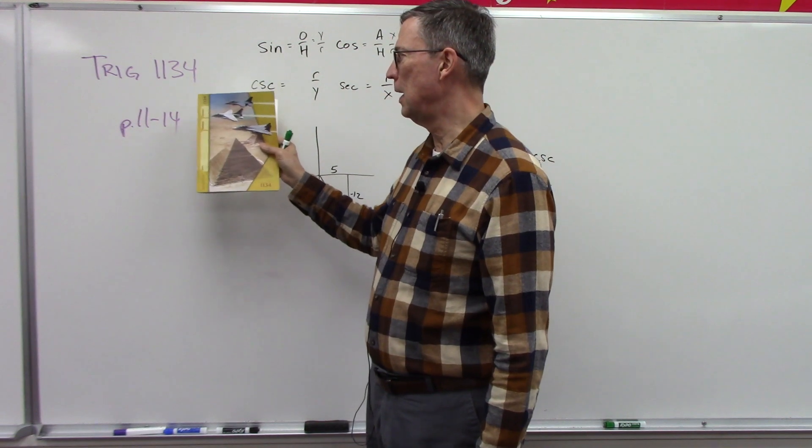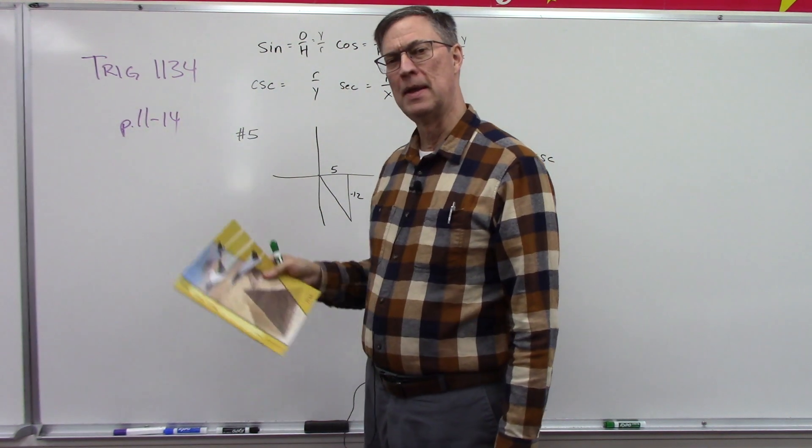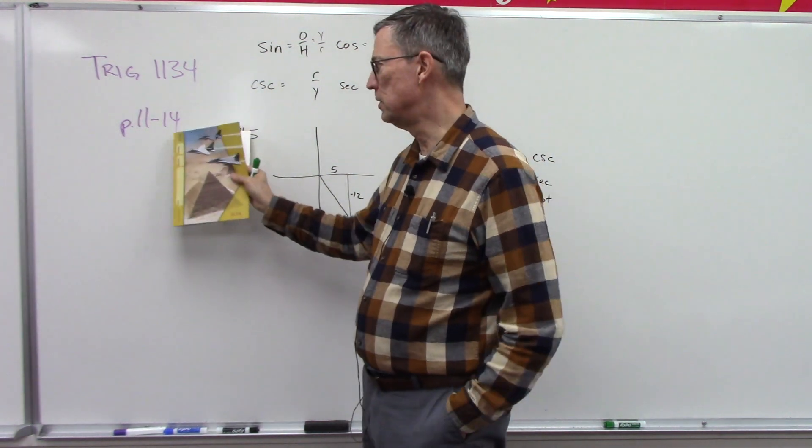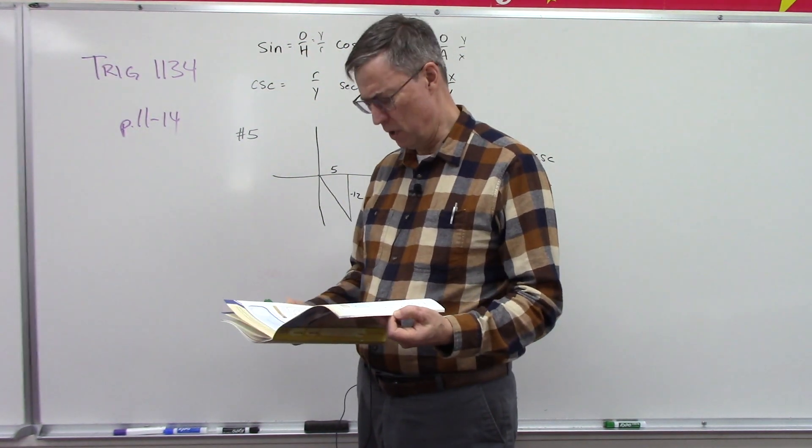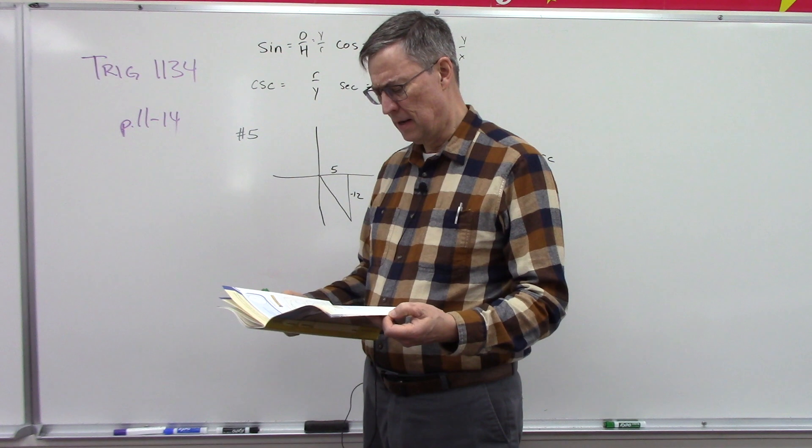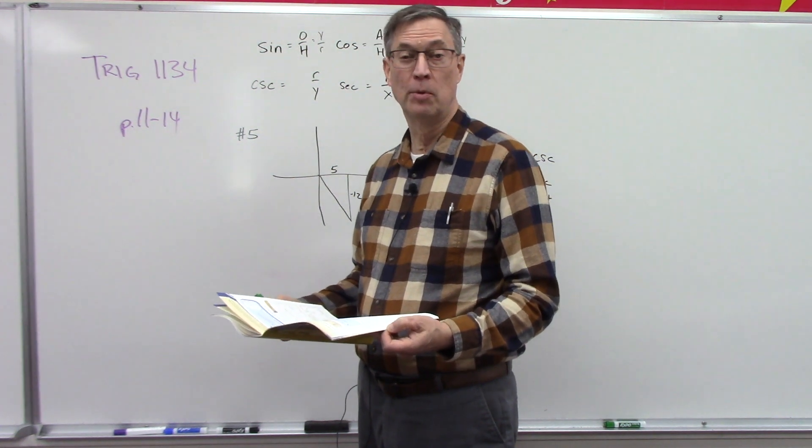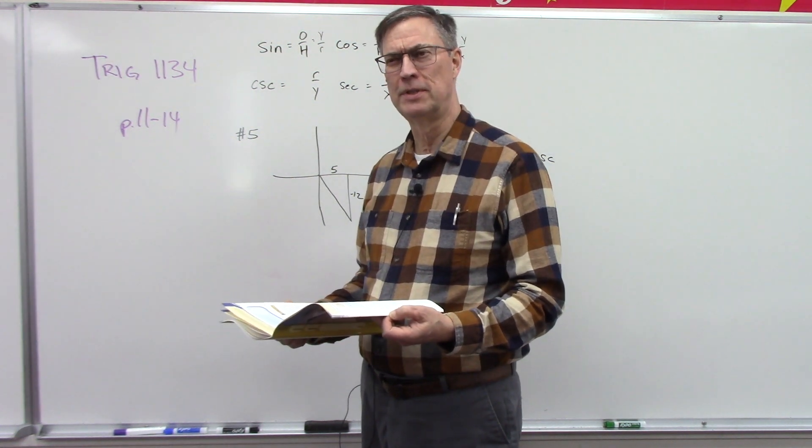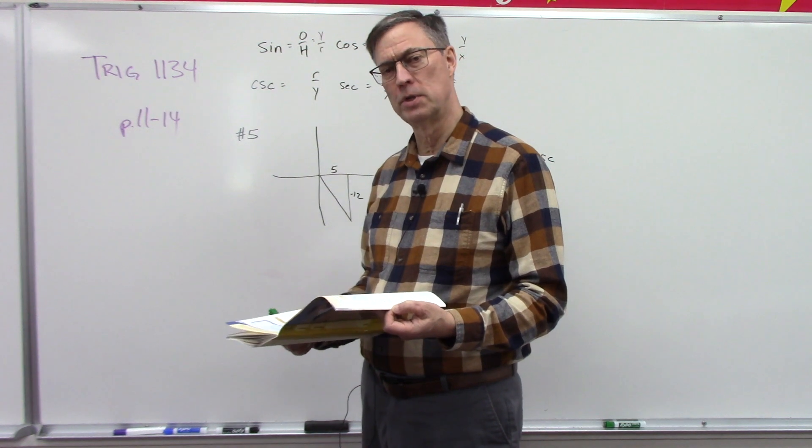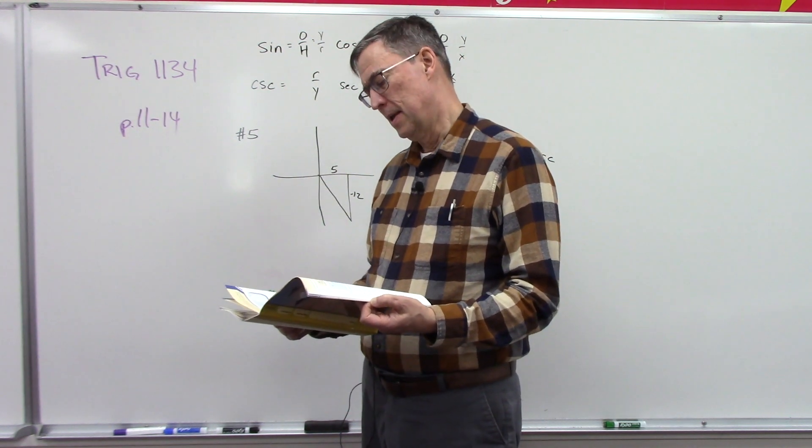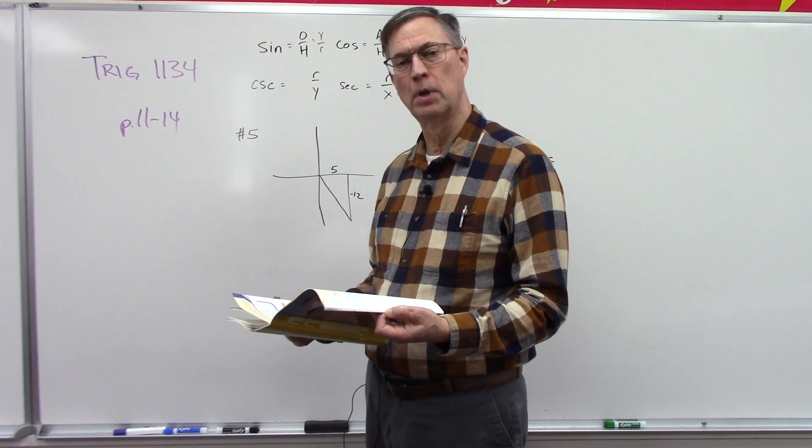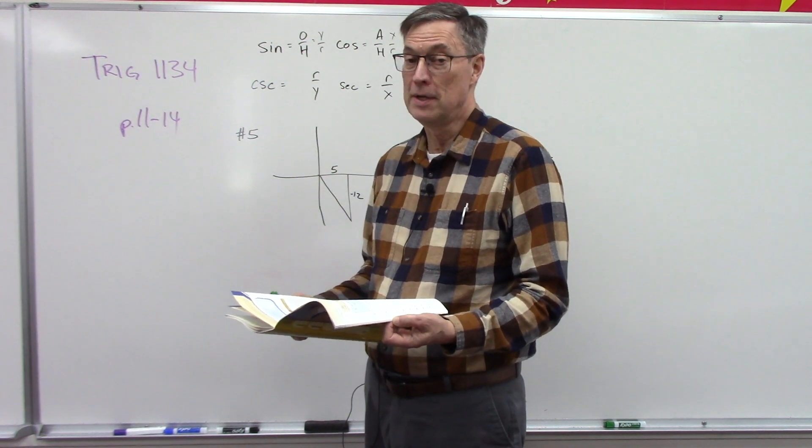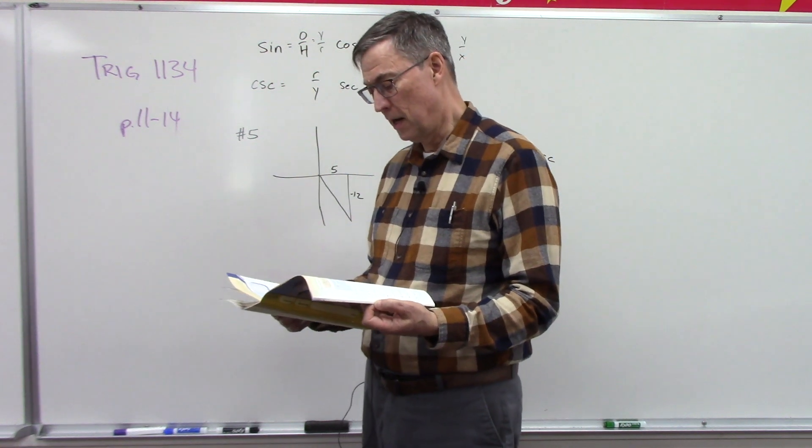All right, let's look at TRIG 1134 and take a quick peek at pages 11 through 14. It's a very simple formula - you don't have to necessarily understand it, you're just plugging in. To get the length of the side, you just multiply the length of the radius, which they give you, times whatever the angle measure is, and that has to be in radians.